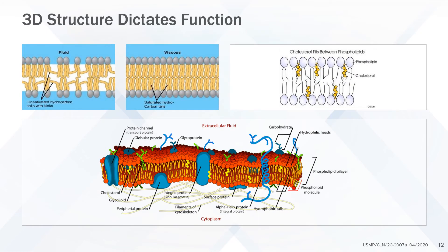The structural characteristics of fatty acids are extremely important because they affect membrane fluidity and the localization and function of membrane proteins such as ion channels, receptors, transporters, and signaling molecules. Changes in membrane structure and function are believed to be responsible for many of the biological effects of fatty acids and for the differences between fatty acids of different classes.